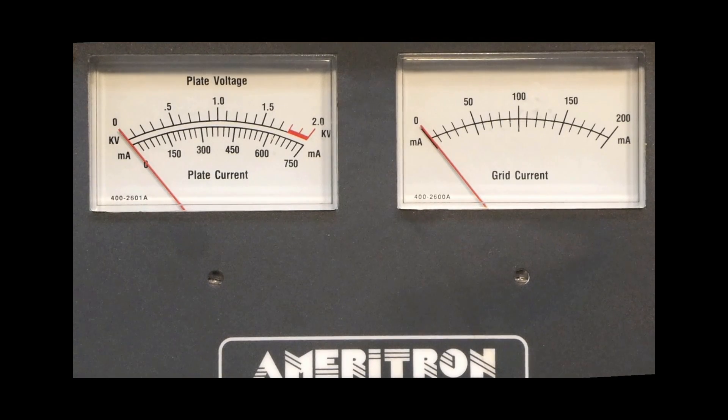The radio is on CW. There's no key in the key jack, so there's no RF from the radio. I'm going to manually key the radio and watch the plate current and the grid current meters.